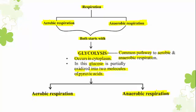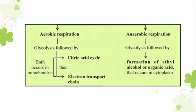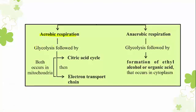The end products are completely different in aerobic and anaerobic respiration. If it is aerobic respiration, the first step is glycolysis taking place in the cytoplasm. The end product — pyruvic acid or pyruvate — then enters into the citric acid cycle or Krebs cycle, and finally into the electron transport chain. Both the Krebs cycle and electron transport chain occur in the mitochondria.